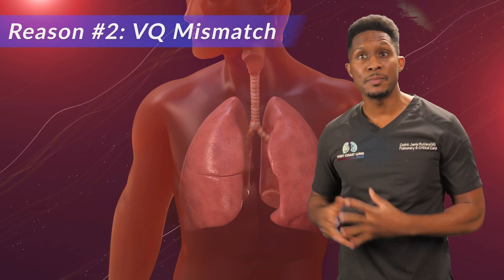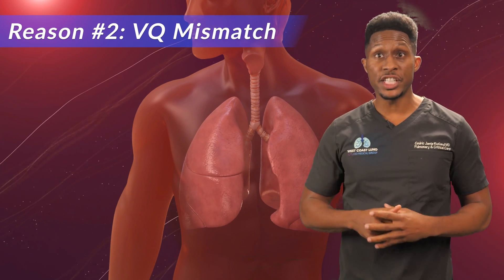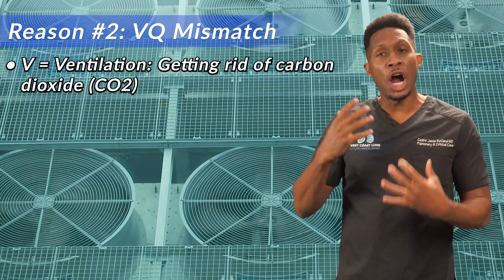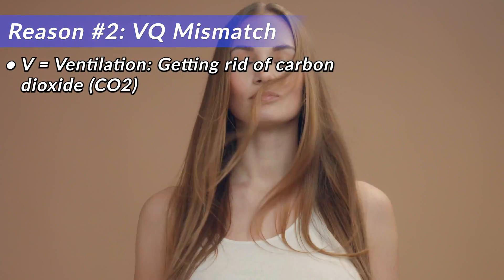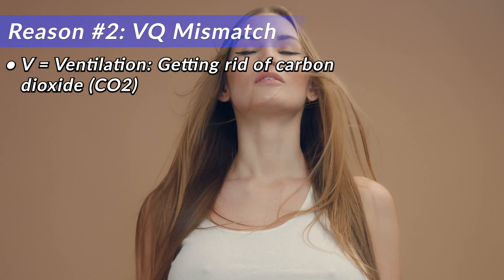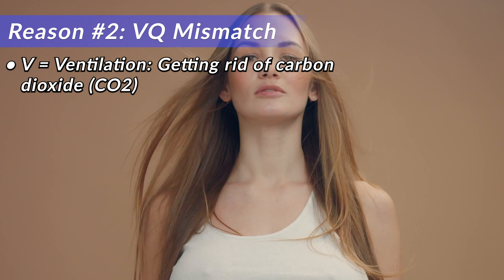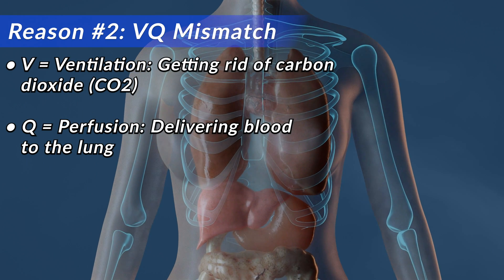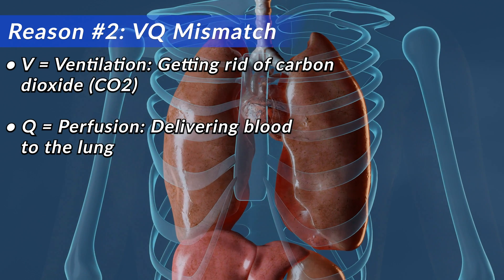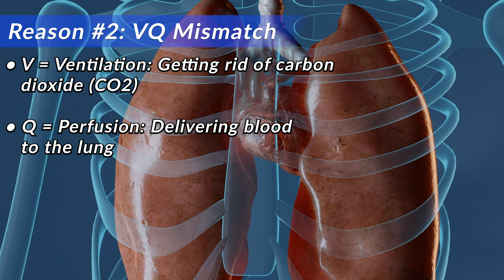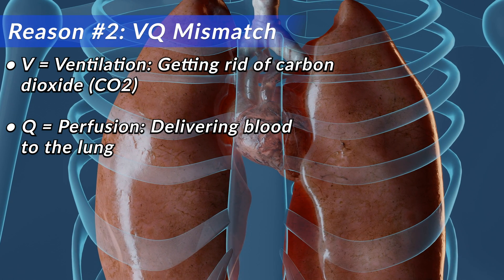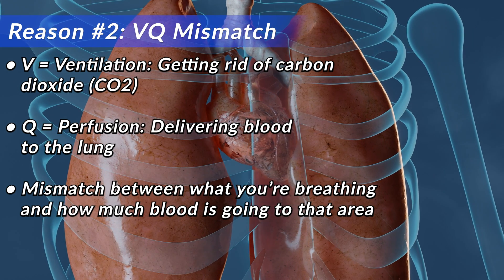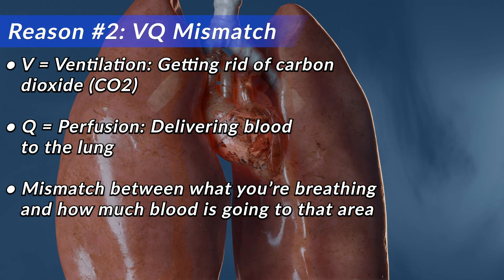Reason number two: you have a VQ mismatch. The V stands for ventilation, which by definition means that you're getting rid of CO2. Carbon dioxide is what our bodies create as a waste product — when we breathe in oxygen, we breathe out carbon dioxide. The Q is a fancy way of saying perfusion, which means delivering blood to the lung. That's where the right heart is pumping blood to the lung through the pulmonary artery and then through the capillaries, which are essentially the lining of the balloons. So if you have a mismatch between what you're breathing and how much blood is going to that area, we call that a VQ mismatch, and you may not get enough oxygen in your bloodstream.